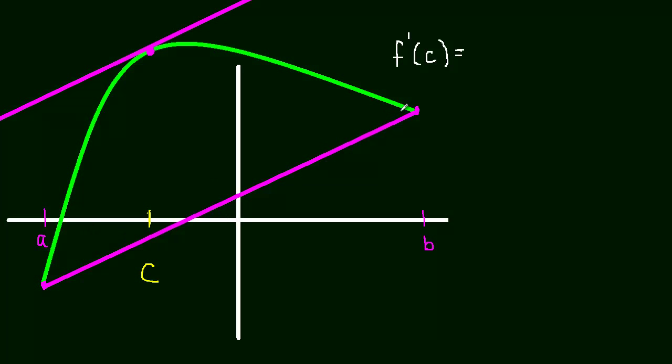Well, to find slope, we just do y2 minus y1. So that would be F of B, that's y2, minus F of A, that's y1, all over B minus A. And of course, this theorem assumes that the function is continuous and differentiable.